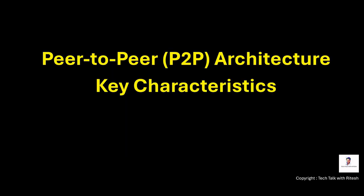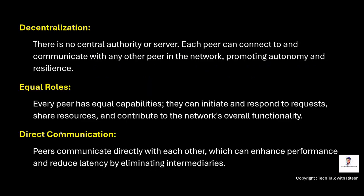Now let's see the key characteristics of this architecture. First is decentralization — there is no central authority or server. Each peer can connect to and communicate with any other peer in the network, promoting autonomy and resilience. Second is equal roles: every peer has equal capabilities. They can initiate and respond to requests, share resources, and contribute to the network's overall functionality.